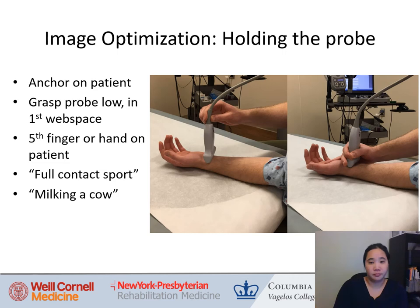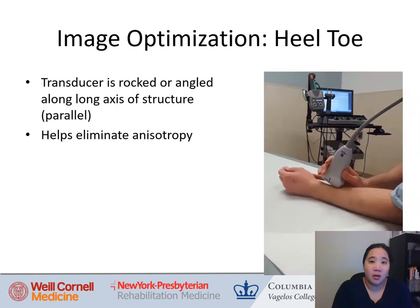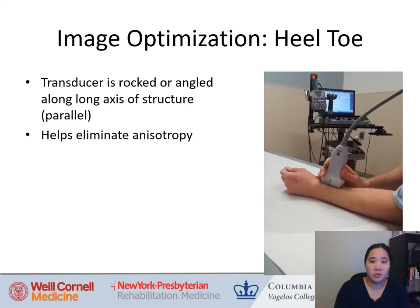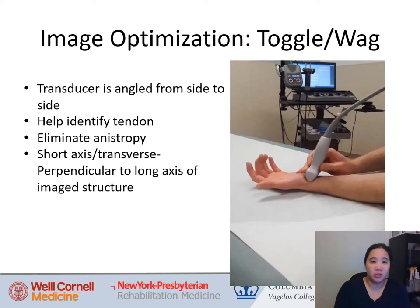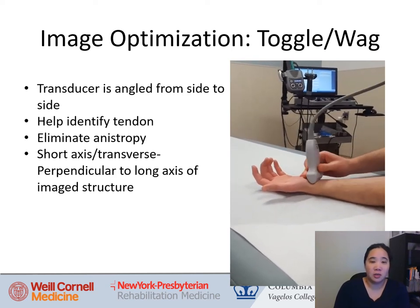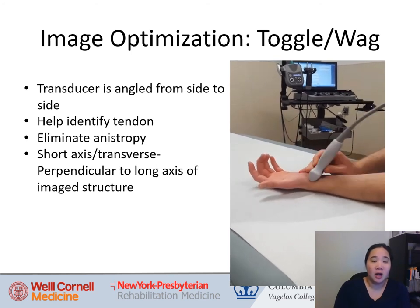Heel-toe is when you're looking at a structure in long axis — holding the probe parallel to the structure and rocking or angling the transducer along the long axis. This is helpful and eliminates anisotropy. Toggle and wag involves angling the transducer from side to side, usually looking at the structure in short axis or perpendicular to the long axis. This helps identify tendons well and also eliminates anisotropy.